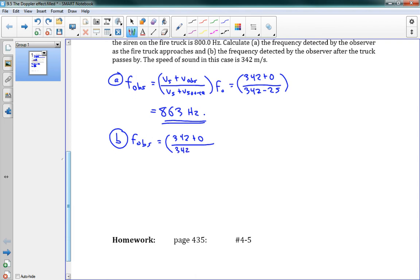Over 342. In this case, the source is still moving at 25 meters per second, but now they're moving away from me. Once they've passed by me, they're moving away from me. So plus 25. And this gives me a value of 746 hertz.